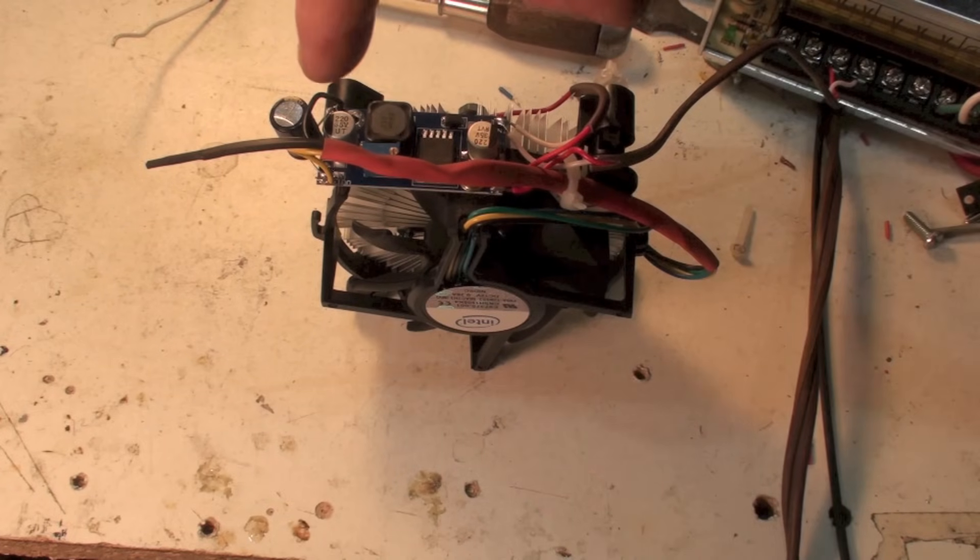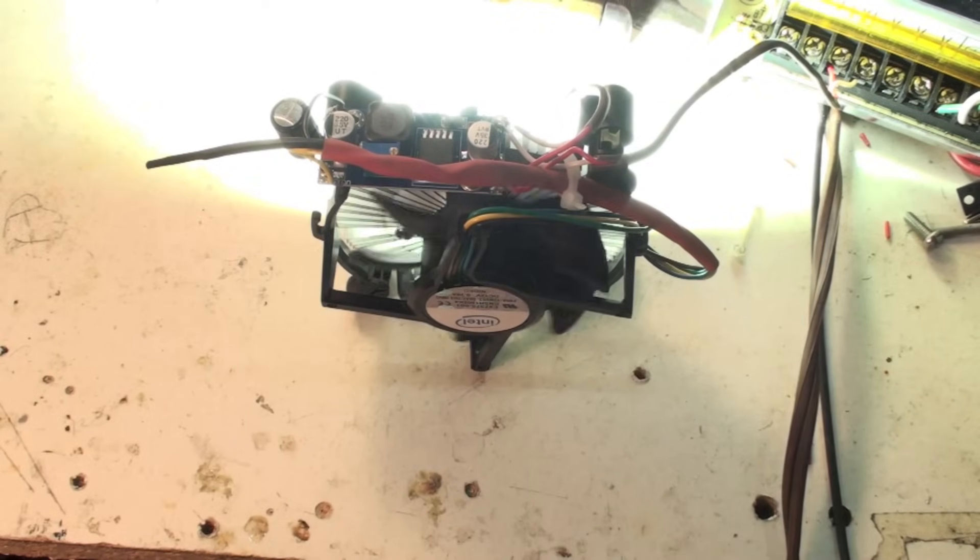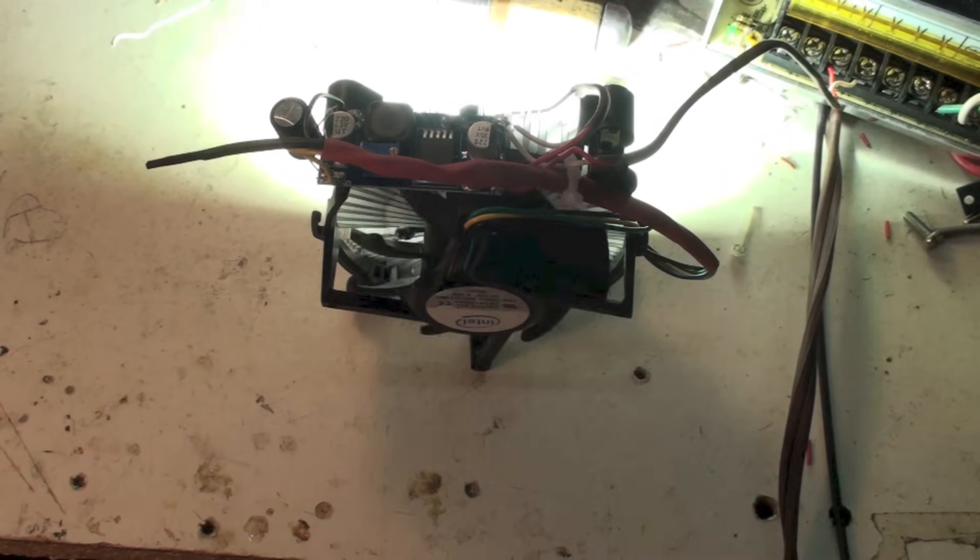So I put a 470 microfarad, 25-volt electrolytic capacitor on the output, and it actually made this thing work. I'll show you how it works. The light comes on—you see the little jerk in the fan—and off she goes. Works that way every time.